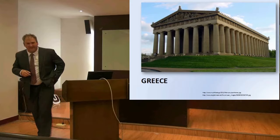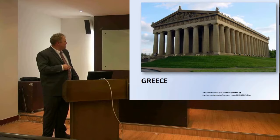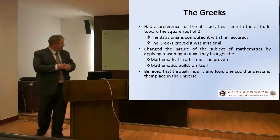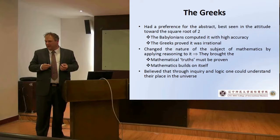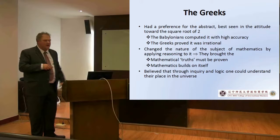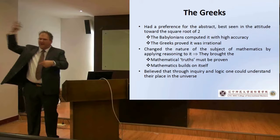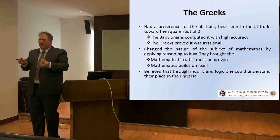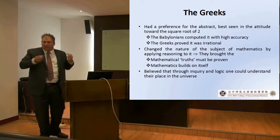Now let's move to Greece. The Greeks are probably the most impactful culture on mathematics of any we know of, especially in modern Western culture. One of the reasons is because the Greeks took, for example, the square root of two and proved that it was irrational. They brought the power of proof to mathematics. You take basic concepts, use logical deductions to put them together and create something more complex — building on an axiomatic system by creating proof.